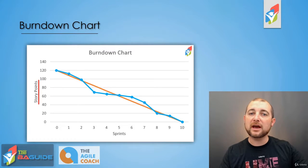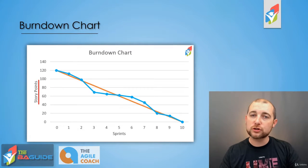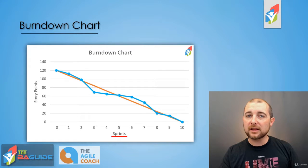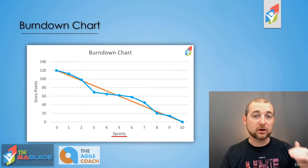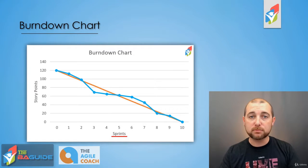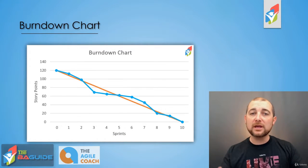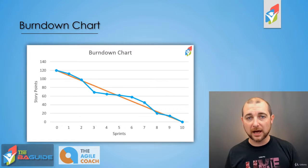On the vertical axis, we have our work — our story points. On the horizontal axis, we have our time — our sprints. In the middle, we have two lines.